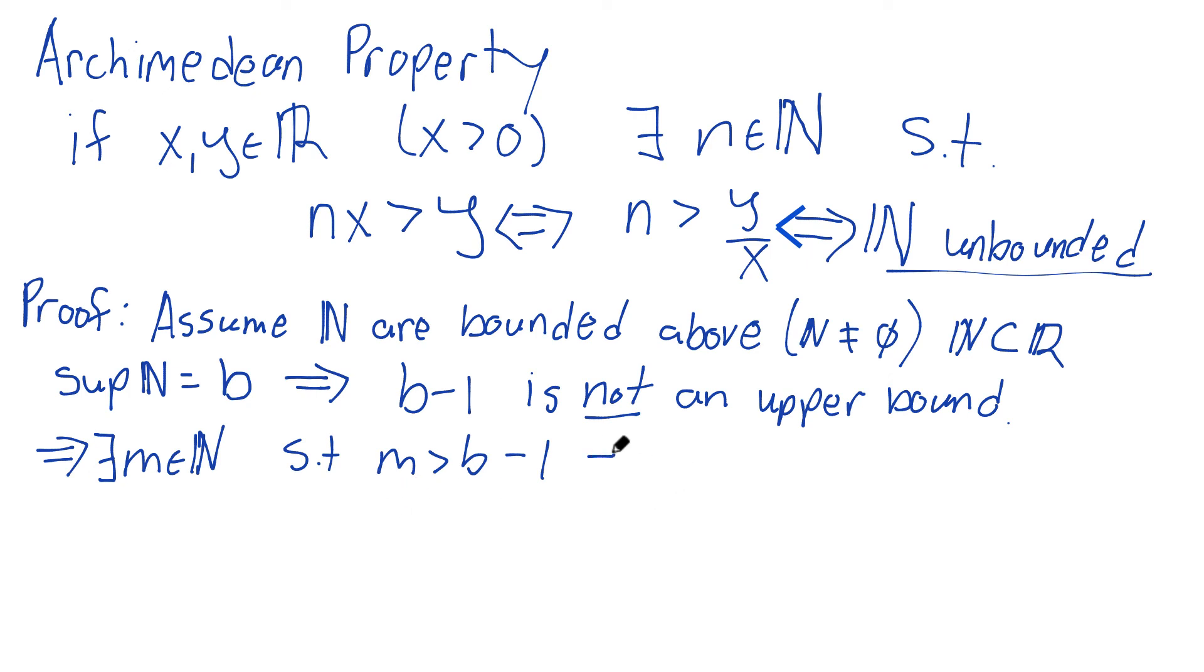And so what I'll do with this inequality is I'll simply add one to both sides here. m plus one would be greater than B. And here's the contradiction.